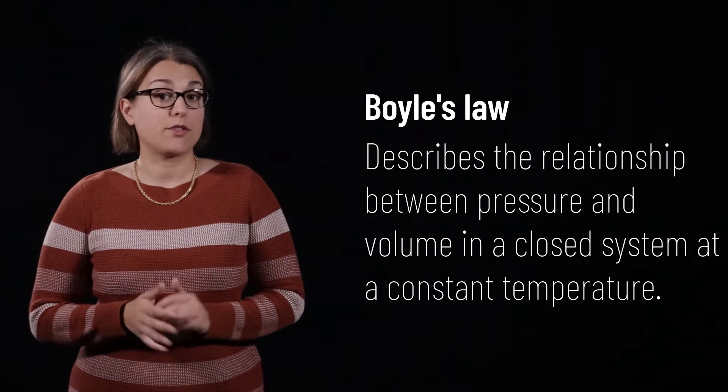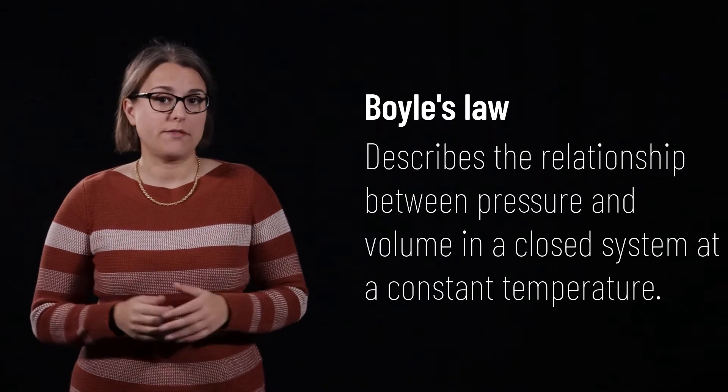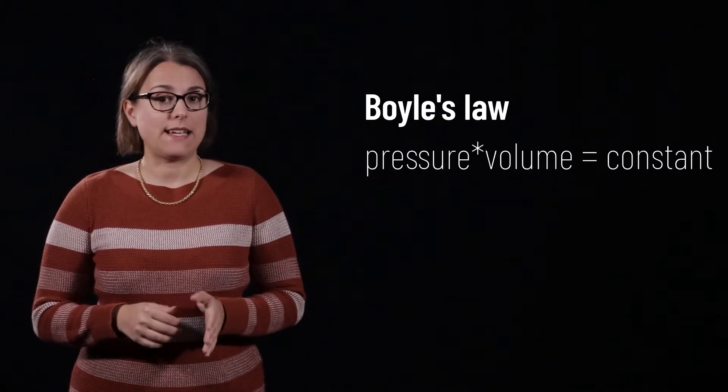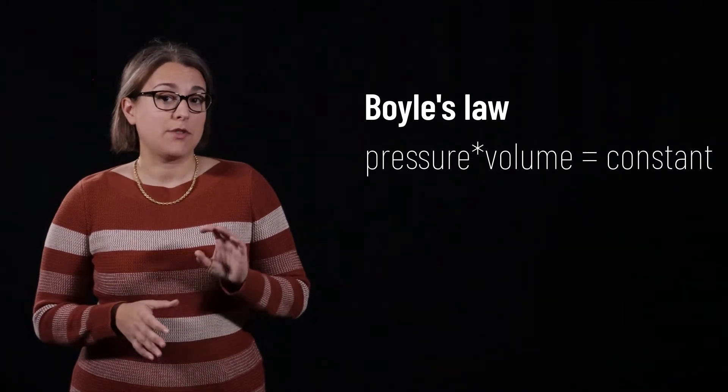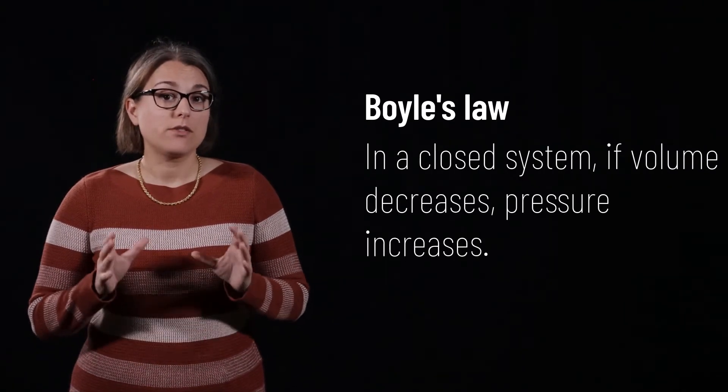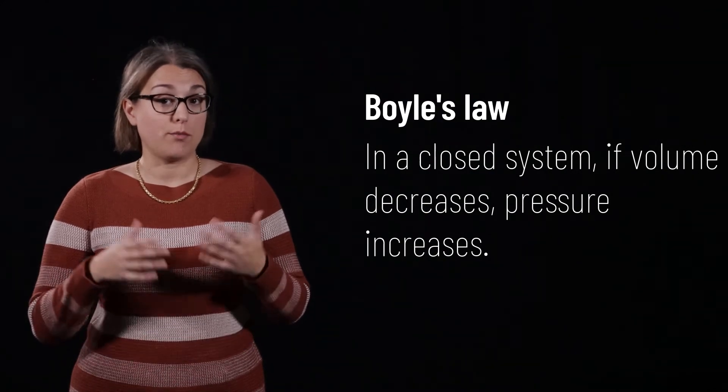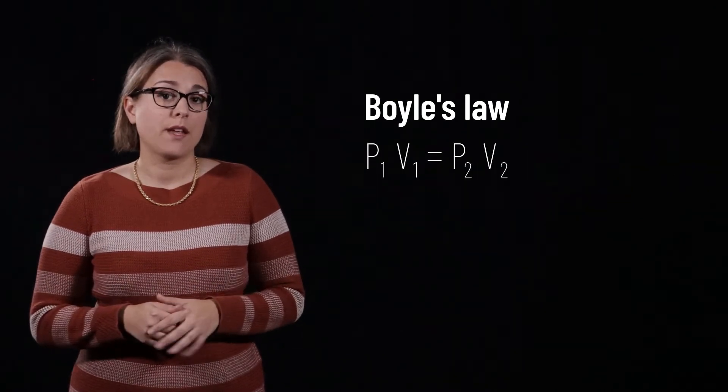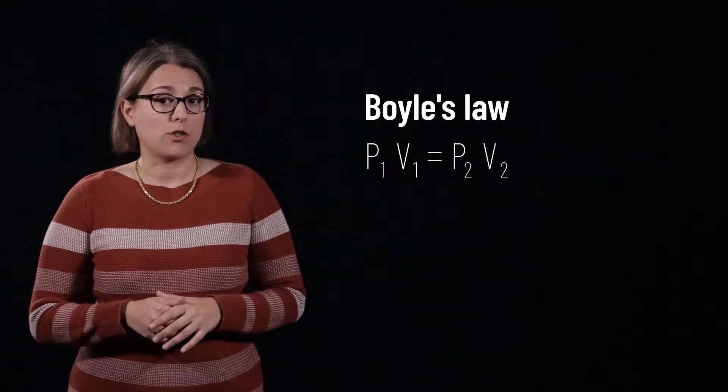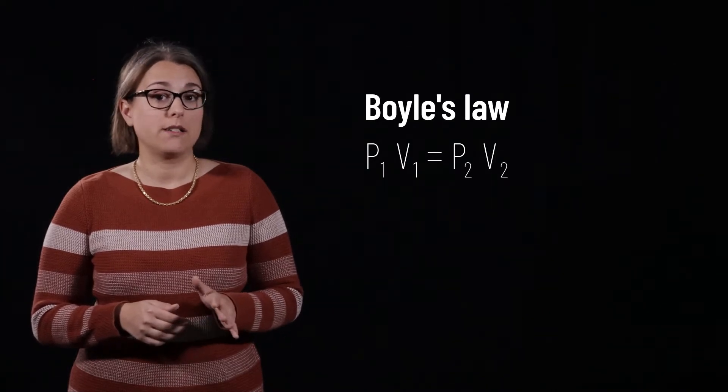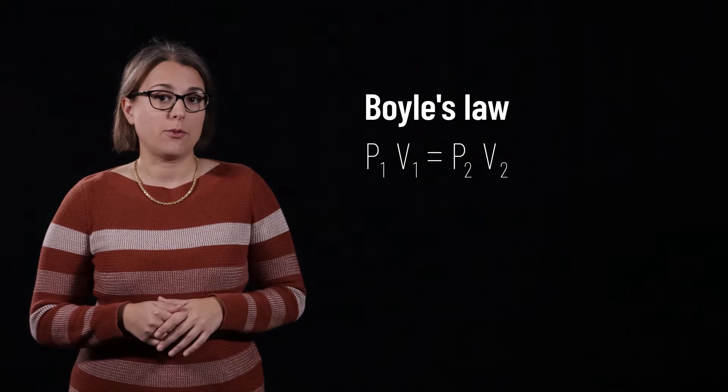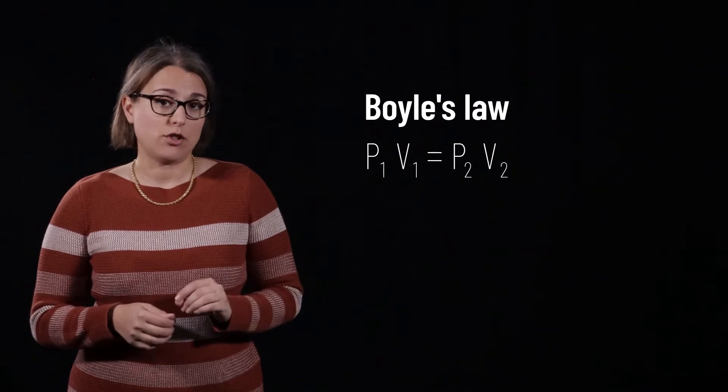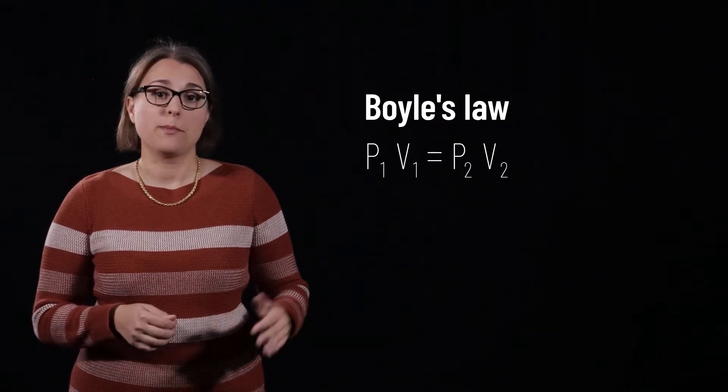Boyle's law describes the relationship between pressure and volume of a gas when the temperature and number of molecules in a system is held constant. It states that the pressure times the volume is a constant. In a closed system, if the volume decreases, it will cause the pressure to increase. If the volume increases, it will cause the pressure to decrease. We can state that in equation form as saying, p1 times v1 equals p2 times v2. In other words, the product of pressure and volume before the change is equal to the product of pressure and volume after the change.